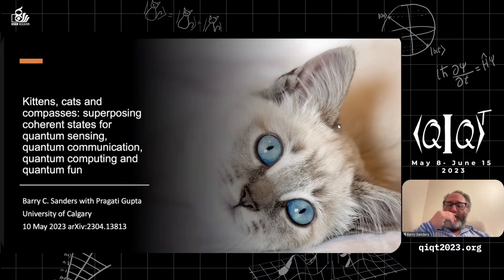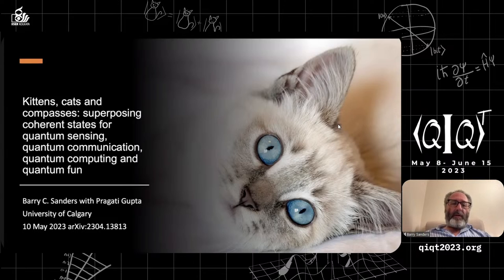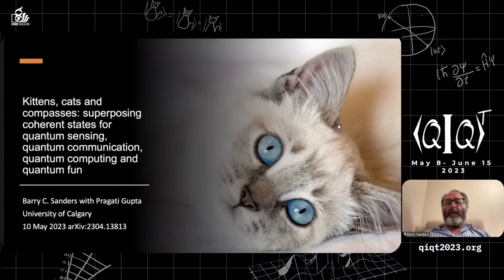I'll give you a general overview of kittens, cats, and compasses. We have late-breaking news — a paper that came out last month on the archive — and my PhD student Pragati Gupta is going to give a couple of slides. One of the nice things about Zoom talks is I get a chance to showcase what Pragati has done with cat states, and it'll be on a nucleus, what we're working on.